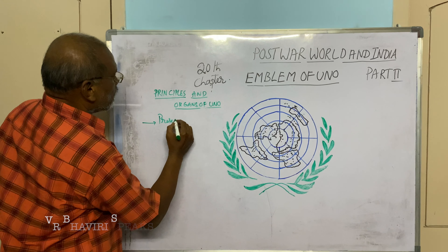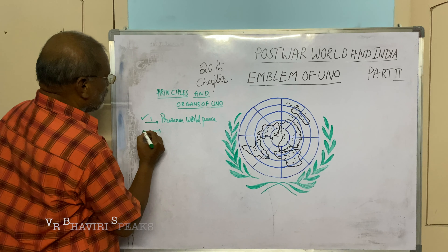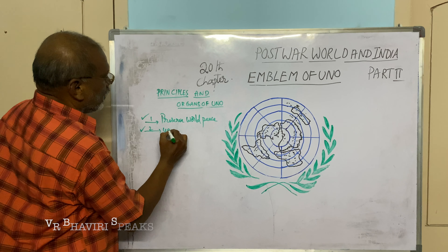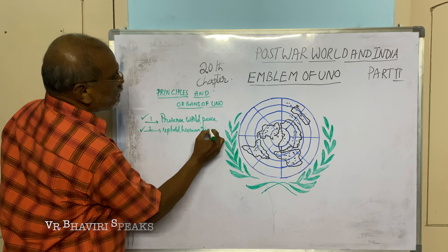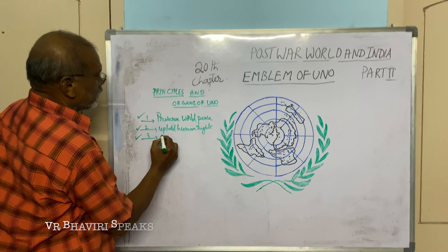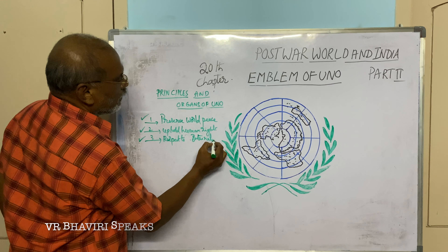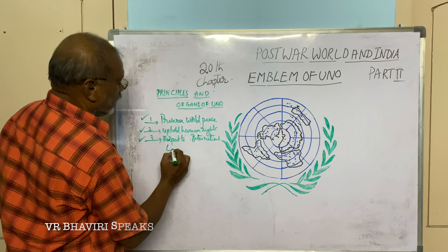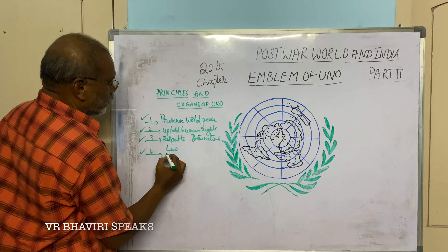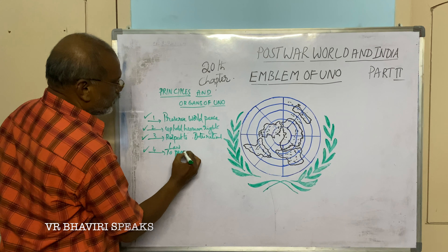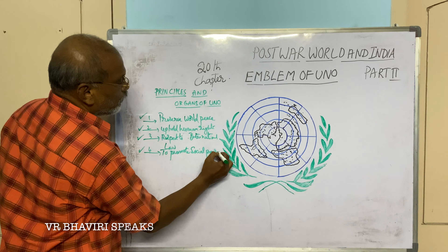The first principle is to preserve world peace. The second one is to uphold human rights. The third one is to respect international law. And the last one is to promote social progress. United Nations Organization works on these four principles.